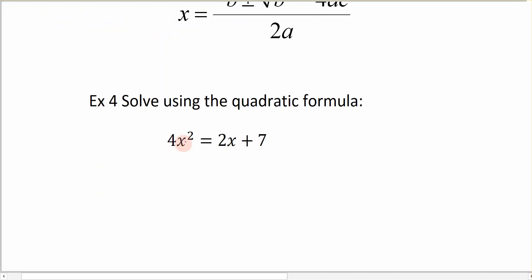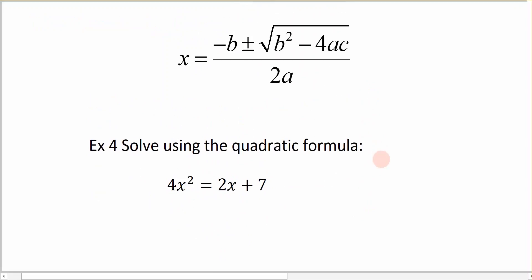Here is my equation: 4x squared equals 2x plus 7. In order to use the quadratic formula, all of my terms have to be on the same side, and it has to be set equal to 0.